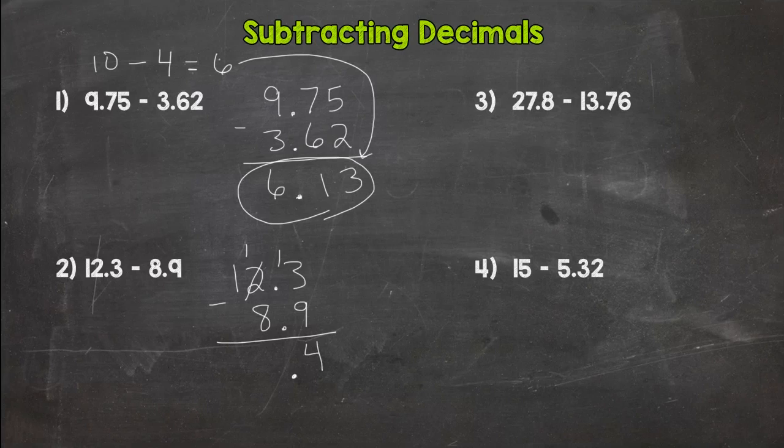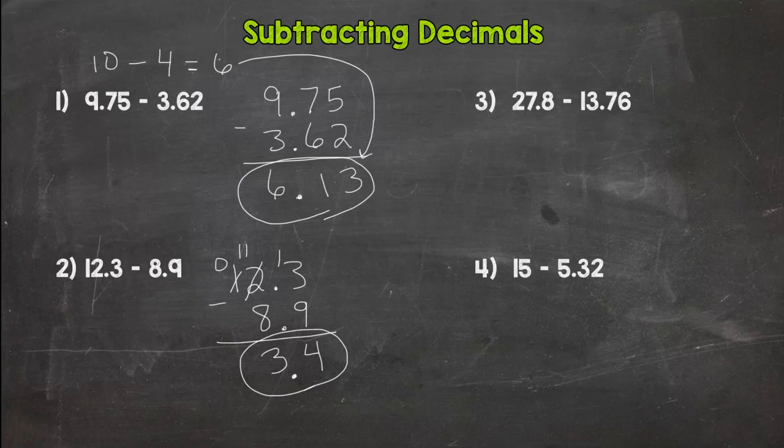Bring our decimal straight down. Cannot do one minus eight—don't put seven there. One minus eight is not seven; we need to borrow. We get to eleven minus eight, which is three. Then we just have a zero, so 3.4. Let's round and use estimation to see if our answer makes sense. This would round to twelve, and 8.9 would round to nine. Twelve minus nine is three, so our estimation is three. Our answer makes sense; we have a reasonable answer.